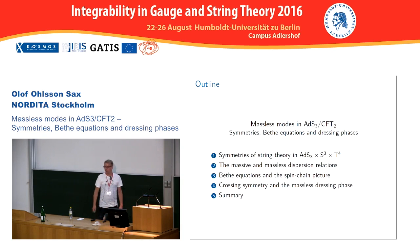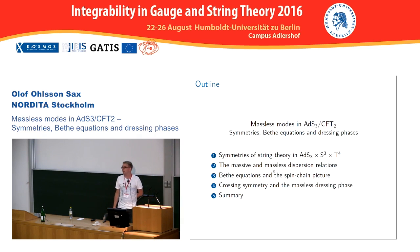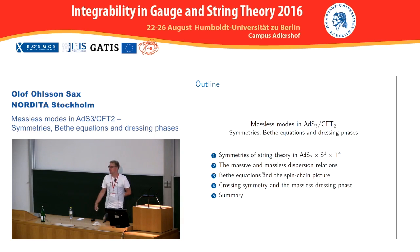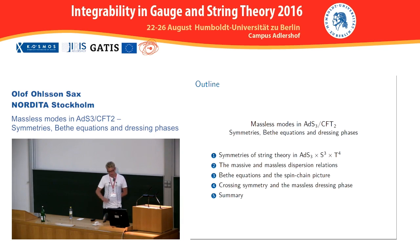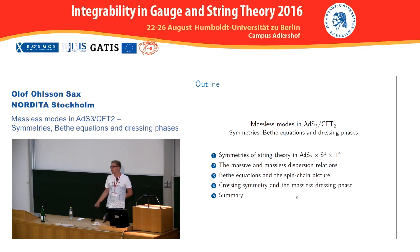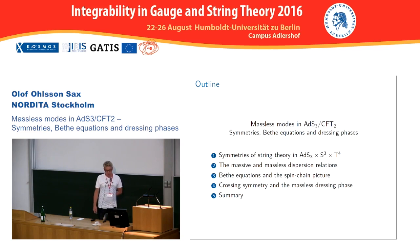So this is just a brief outline of my talk. We'll start by discussing the symmetries of string theory in AdS3×S3×T4. Then I talk about the massive and massless dispersion relations of the modes in the near-BMN background. Then I will discuss the Bethe equations and how you can write down the spin chain pictures of these asymptotic equations. Finally I will discuss crossing symmetry and the massless dressing phase.